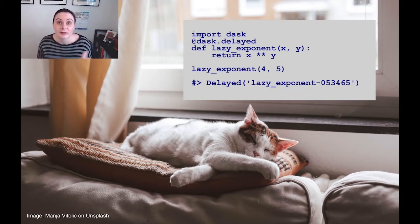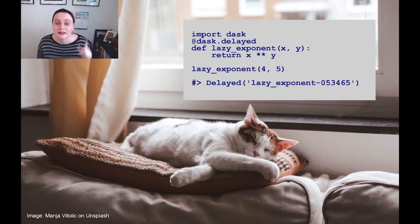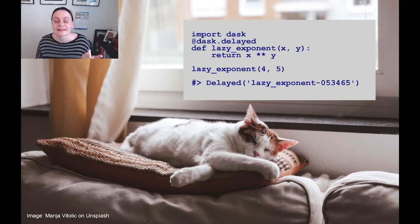You'll notice on the last slide, we had a function that was calculating an exponent and it just returned the value of 1024 right away. But this is the same insides of the function and even the same arguments to the function, but it's got a decorator on it. And that decorator comes from the Dask library.